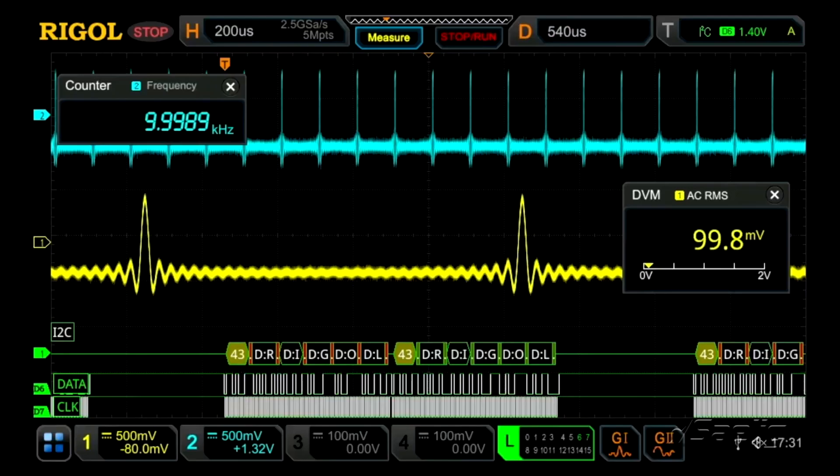Use the oscilloscope, logic analyzer, protocol analyzer, waveform generator, counter totalizer, and voltmeter to characterize, emulate, and analyze signals from DC to high-speed digital and everything in between.